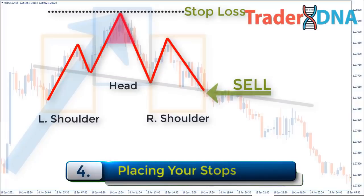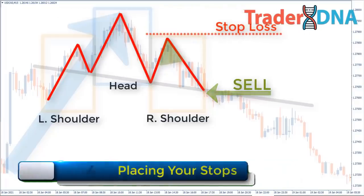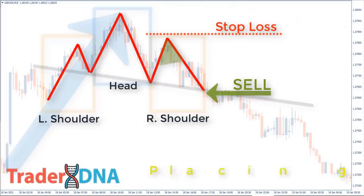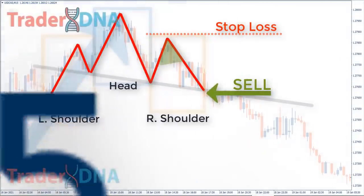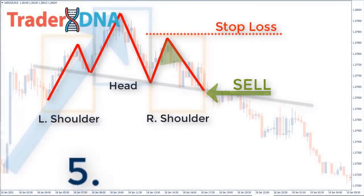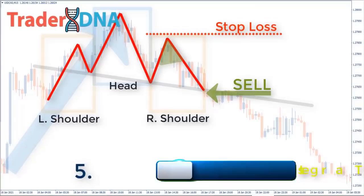Step four: placing your stop loss. Stop losses are placed just above the right shoulder after the neckline is penetrated. Alternatively, the head of the pattern can be used as a stop, but this is likely a much larger risk and thus reduces the reward-to-risk ratio. In the inverse pattern, the stop loss is placed just below the right shoulder. Again, the stop loss can be placed at the head of the pattern, although this does expose the trader to greater risk.